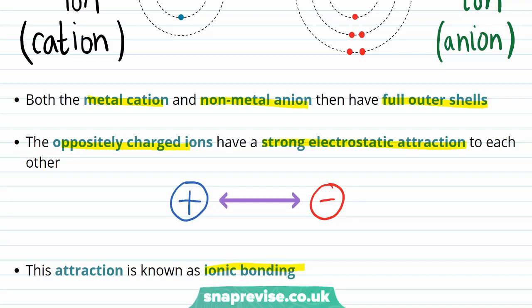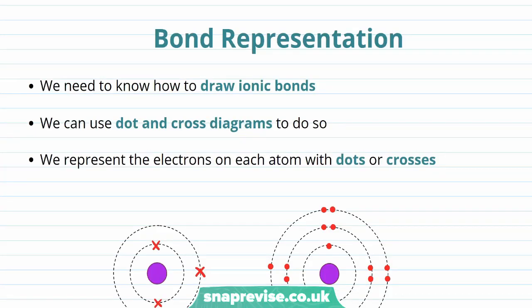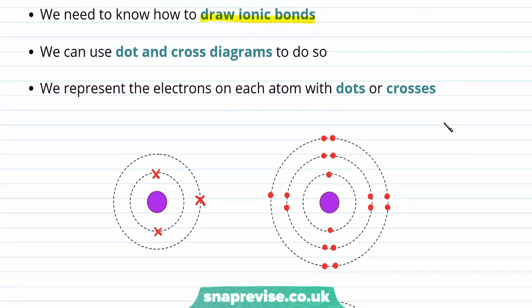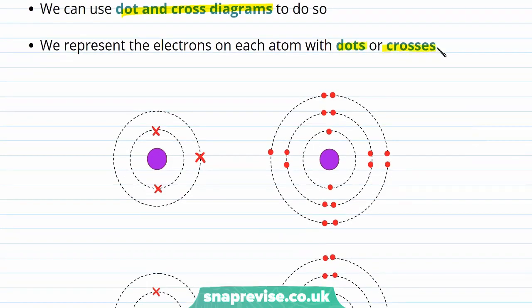We can see that the electron transfer has led to the formation of two stable ions which are then strongly attracted to each other. For metals, forming this ion is easier by losing electrons, whereas for nonmetals it's easier by gaining. So both conditions can be satisfied if a metal reacts with a nonmetal. We can now think about the best way to draw out an ionic bond, and a dot-and-cross diagram is a great way to do this.